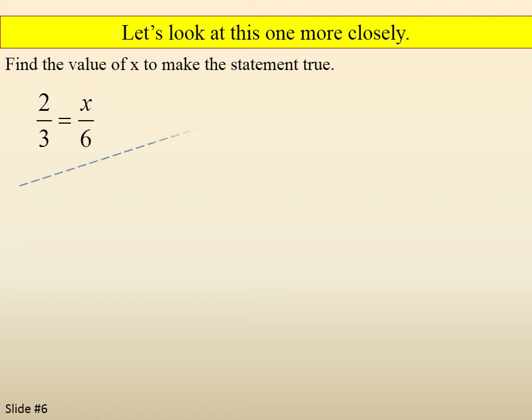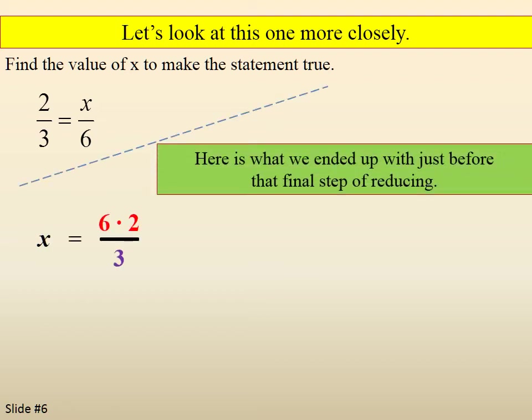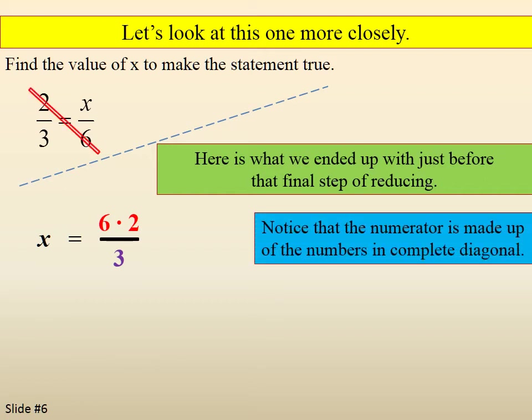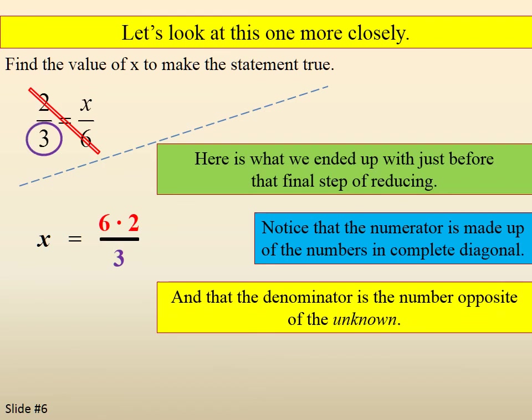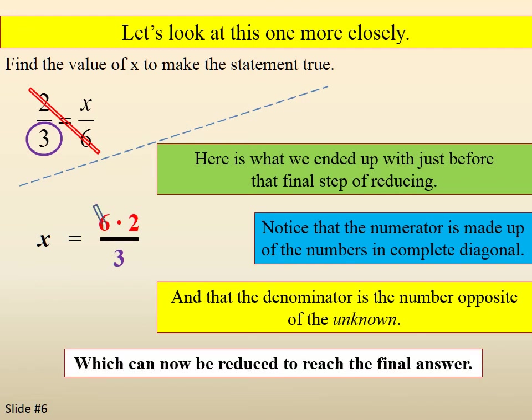Let's look at this more closely. Here's what we ended up with just before the final step of reducing: x equals 6 times 2 over 3. Notice that the numerator is made up of the numbers in the complete diagonal - the diagonal that does not contain our unknown, 6 times 2. The denominator is the number opposite the unknown, which is 3. Then we reduce to get our final answer.